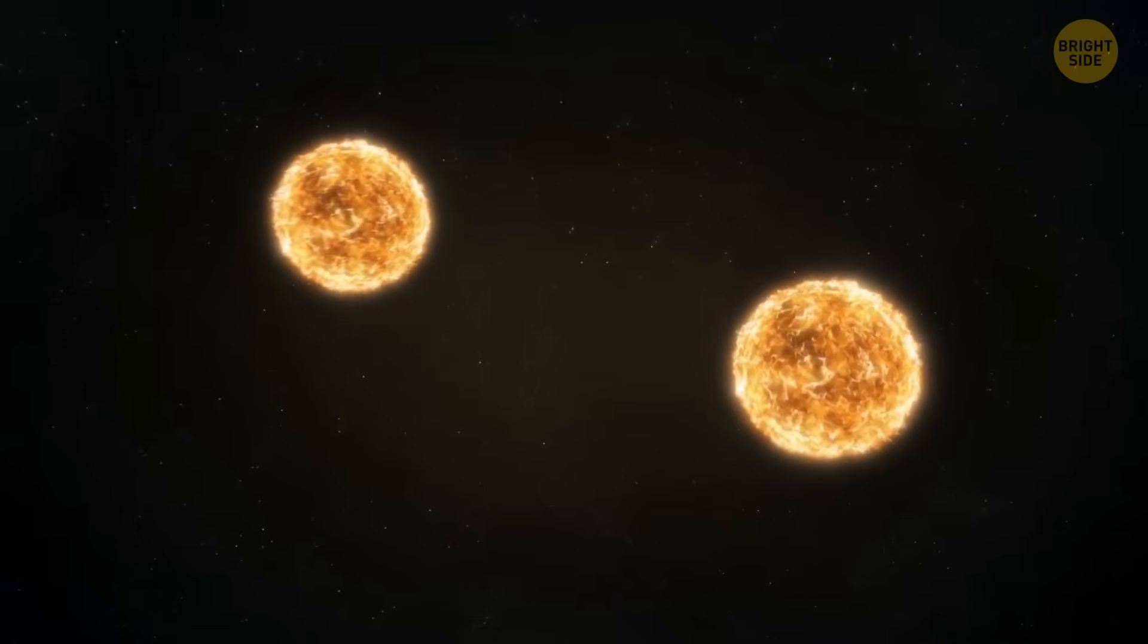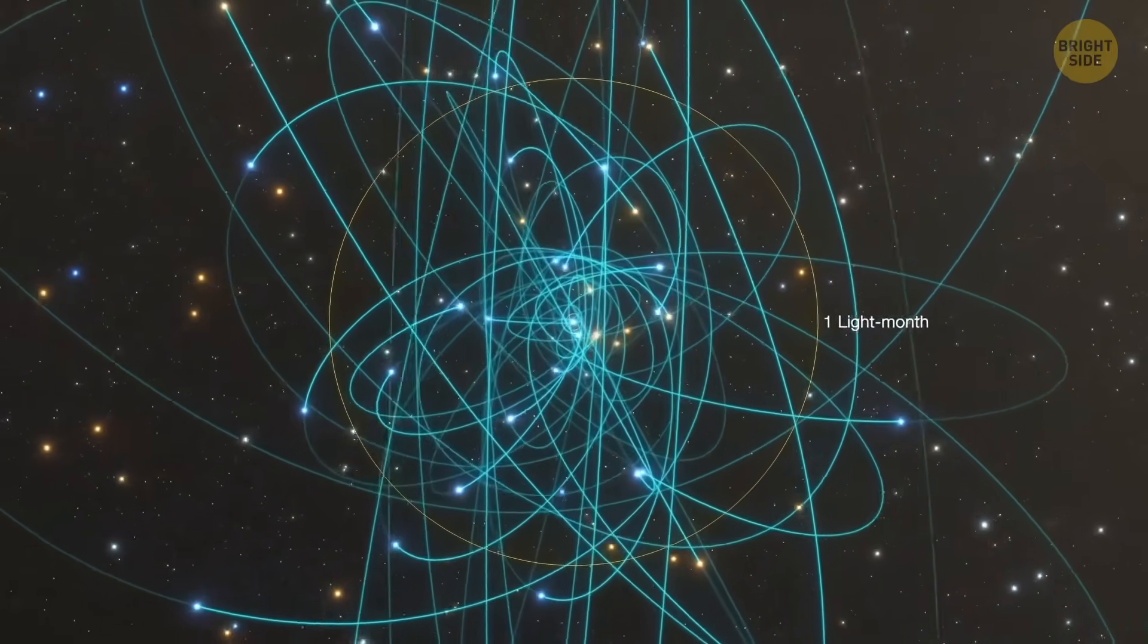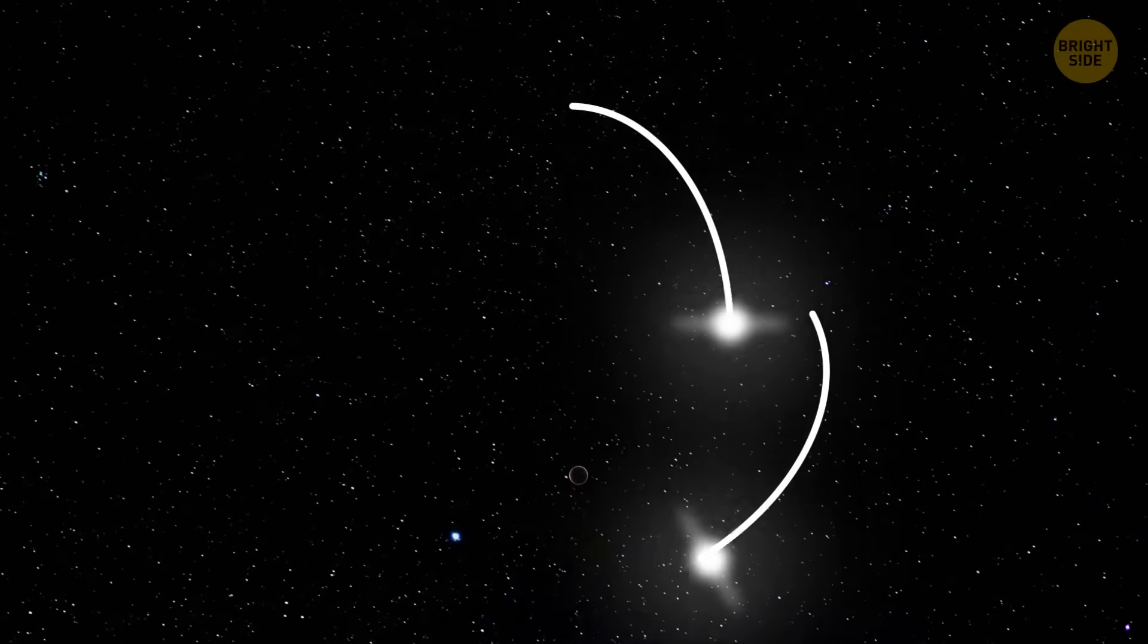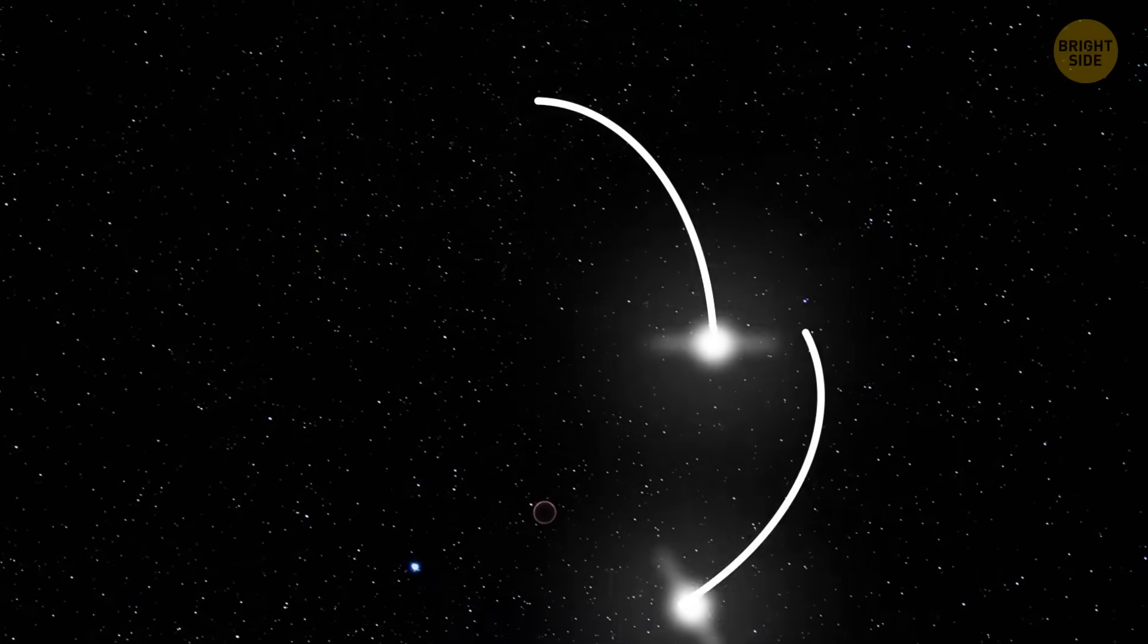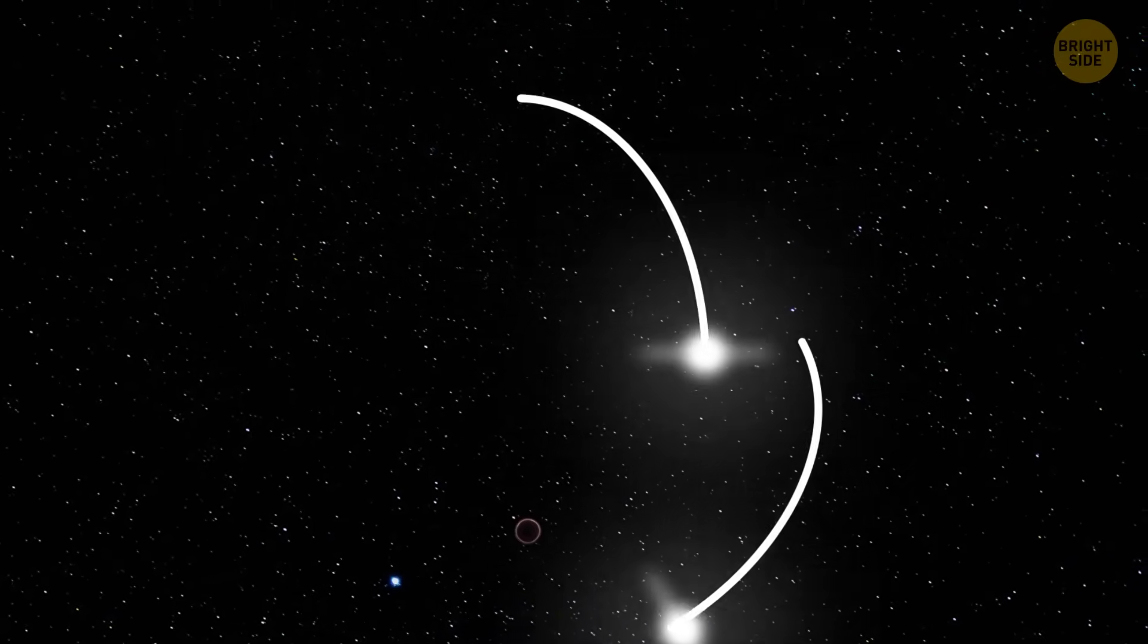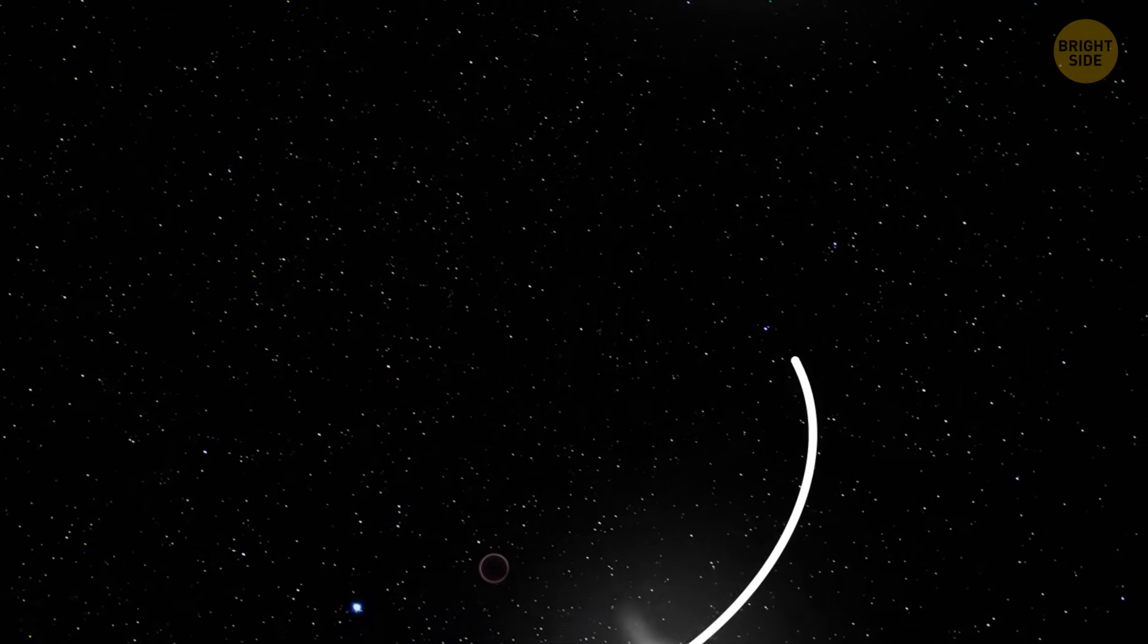We start with a pair of binary stars. They are similar in mass and orbit each other. Sometimes, they stray too close to a black hole. When this happens, one star can get captured by the black hole, its fate sealed, while the other gets the wildest rollercoaster ride of its life.